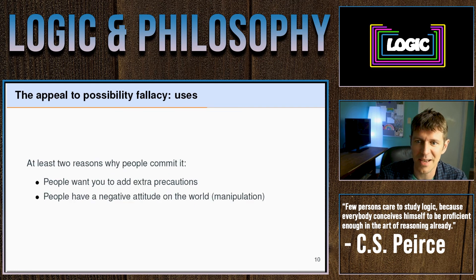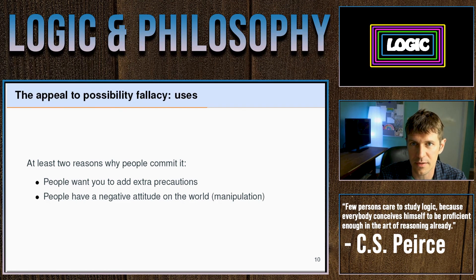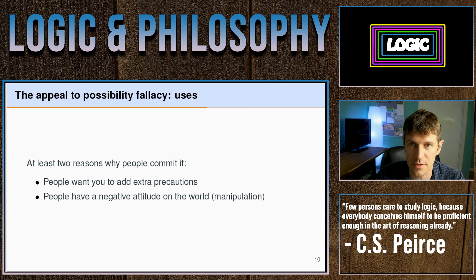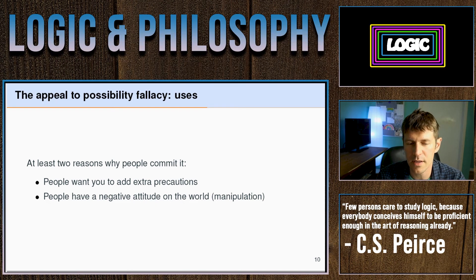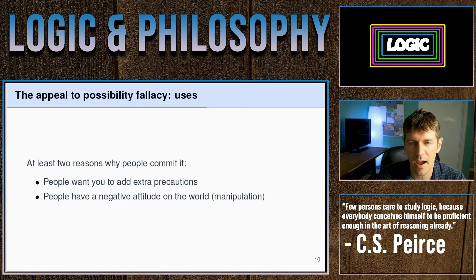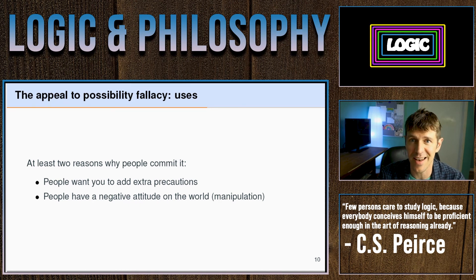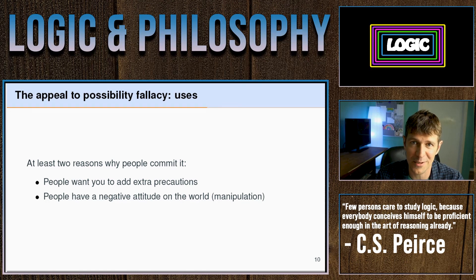Let's look at some more concrete examples, and also think about why people might actually commit this fallacy and the circumstances under which they would. I think there are two key reasons. One is that people will commit this fallacy or invite you to commit it when they want you to add extra precautions or to be safe. The second is that they have a negative attitude toward the world and want to manipulate you, usually toward some kind of negative persuasion.